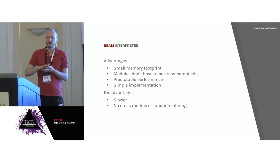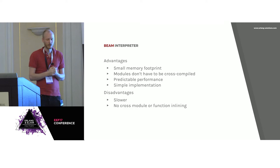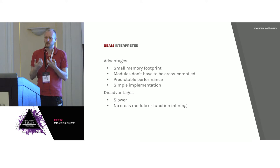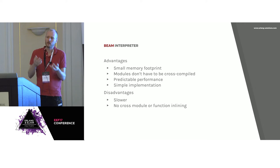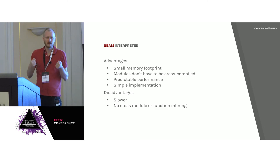Unfortunately, compared to an ahead-of-time compiler like C or C++, it's relatively slow — a factor of 10 to 20 slower, even if we're generous. Because of the way the Erlang model works, we cannot do any cross-module inlining in the Erlang compiler, since you're compiling one single Erlang module at a time. And because of the way Erlang tracing works, we can hardly do any inlining within the module either. We have a lot of constraints that prevent us from producing as good code as we'd like.